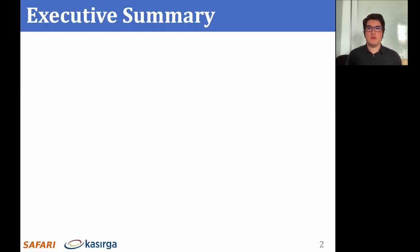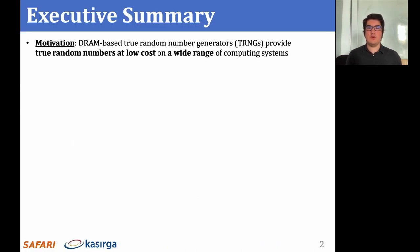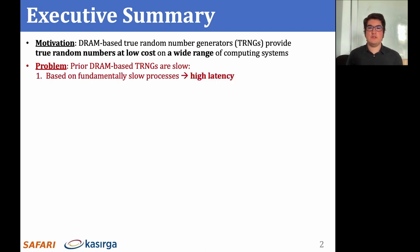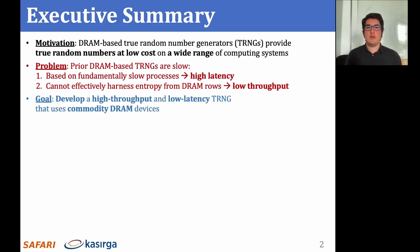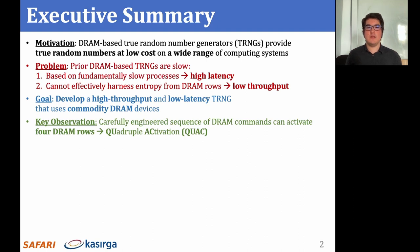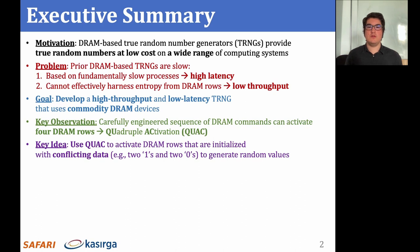I'll start with a high-level summary of our work. DRAM-based true random number generators can provide low-cost true random number generation to a variety of computing systems. However, prior DRAM-based TRNGs cannot provide low-latency and high-throughput true random number generation, as these TRNGs either sample fundamentally slow physical processes or cannot effectively harness entropy from DRAM rows. Our goal is to develop a high-throughput and low-latency TRNG that can be implemented using commodity DRAM devices. We make the key observation that a carefully engineered sequence of standard DRAM commands can activate four consecutive DRAM rows in quick succession.